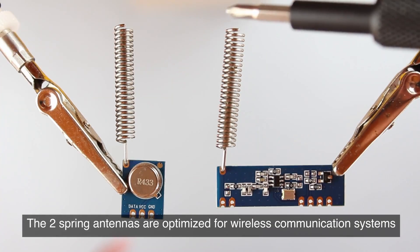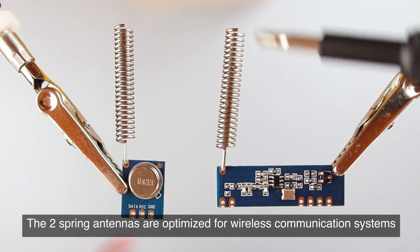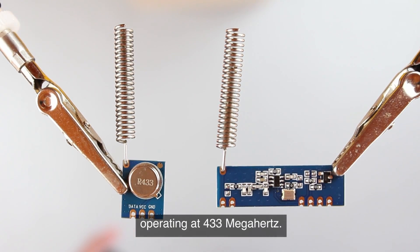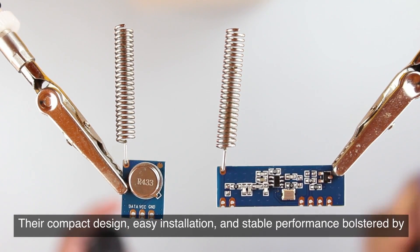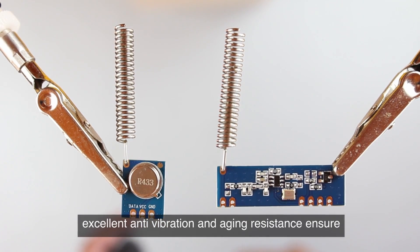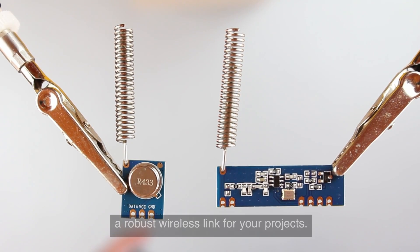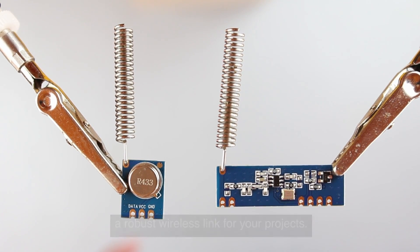The two spring antennas are optimized for wireless communication systems operating at 433 megahertz. Their compact design, easy installation, and stable performance, bolstered by excellent anti-vibration and aging resistance, ensure a robust wireless link for your projects.